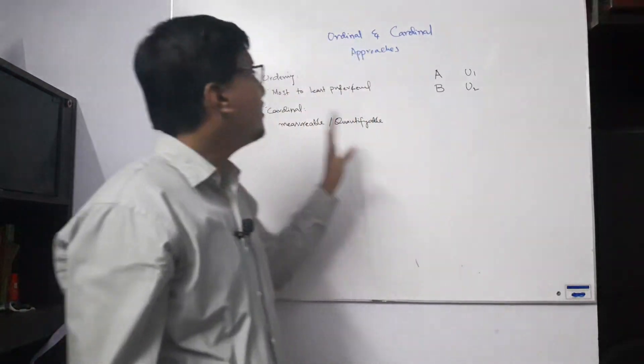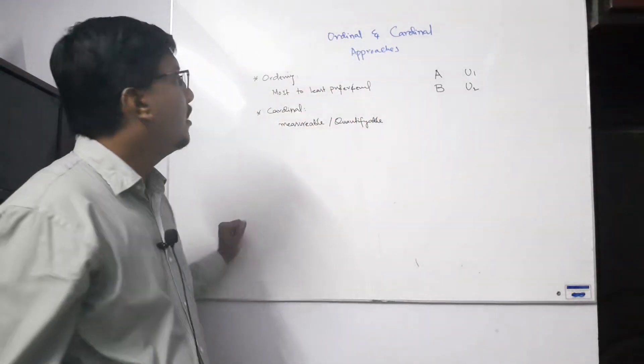They are just giving the orders. In the other way, when we discuss the cardinal approach, this is basically measurable and quantifiable.